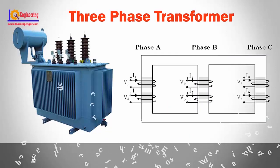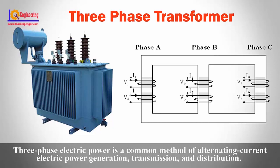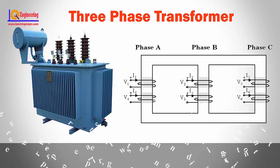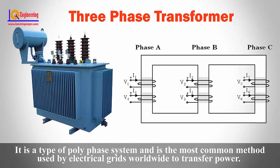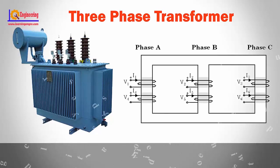Three-phase transformer: Three-phase electric power is a common method of alternating current electric power generation, transmission, and distribution. It is a type of polyphase system and is the most common method used by electrical grids worldwide to transfer power.